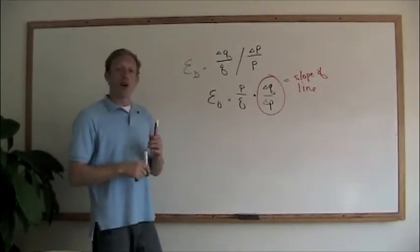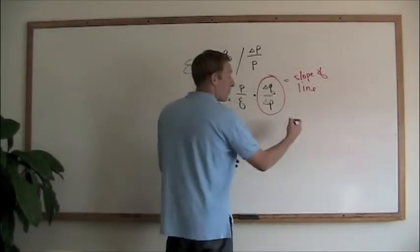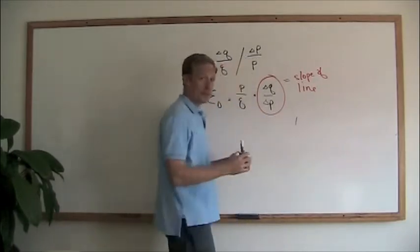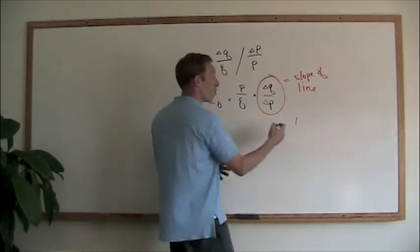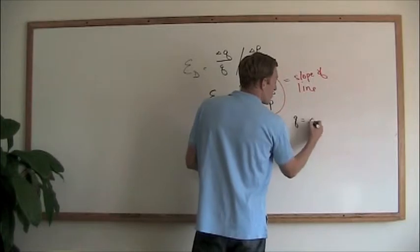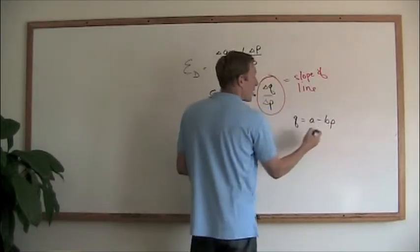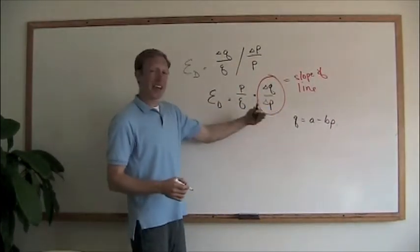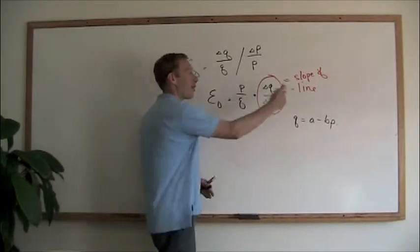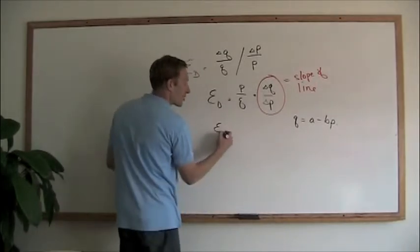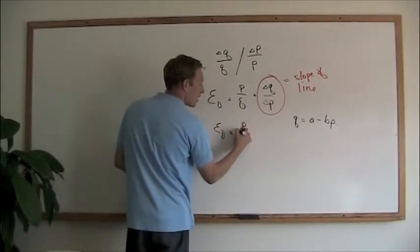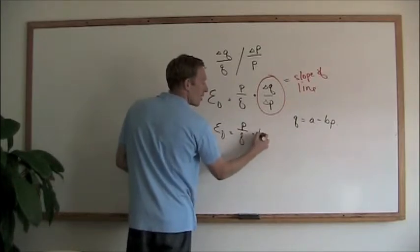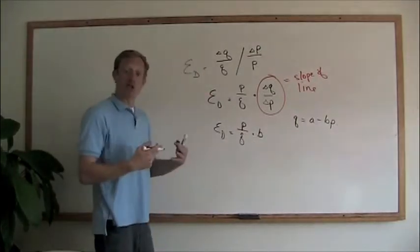So our normal line looks something like this, just our slope intercept form. We have the quantity is equal to a minus b times p. The slope here, of course, is negative b. We put that right in here. So our elasticity of demand is equal to p over q times b, or the slope of the line.